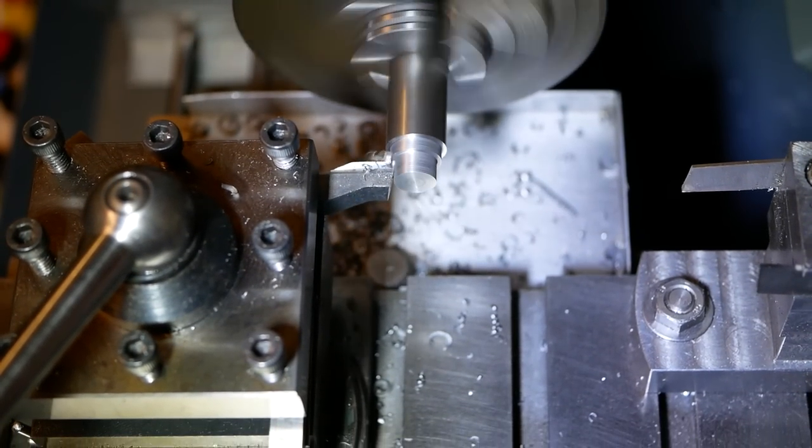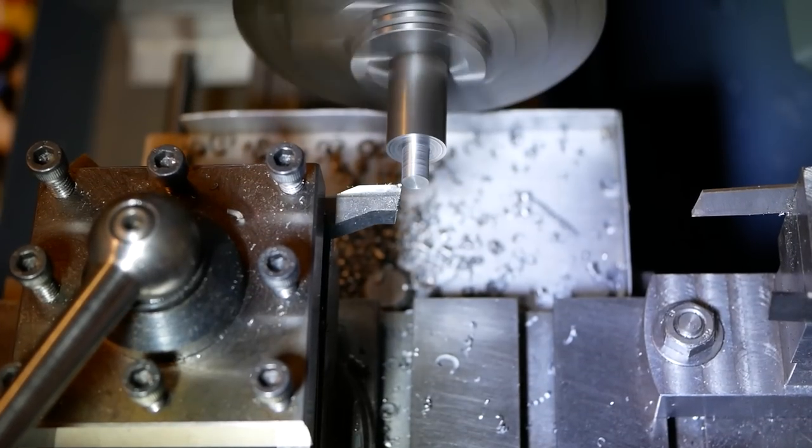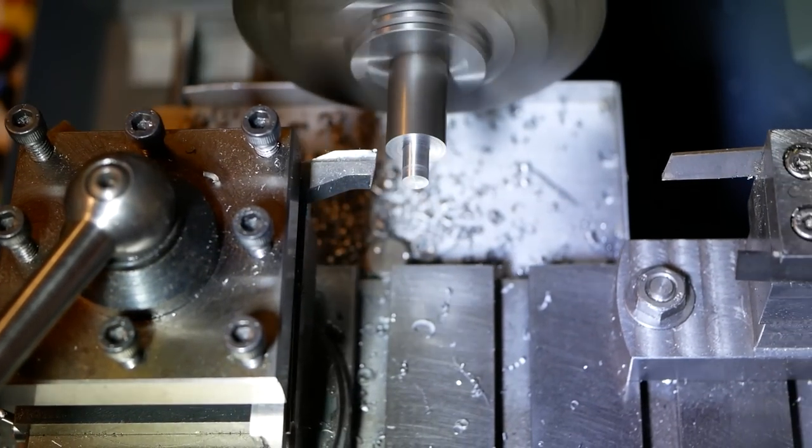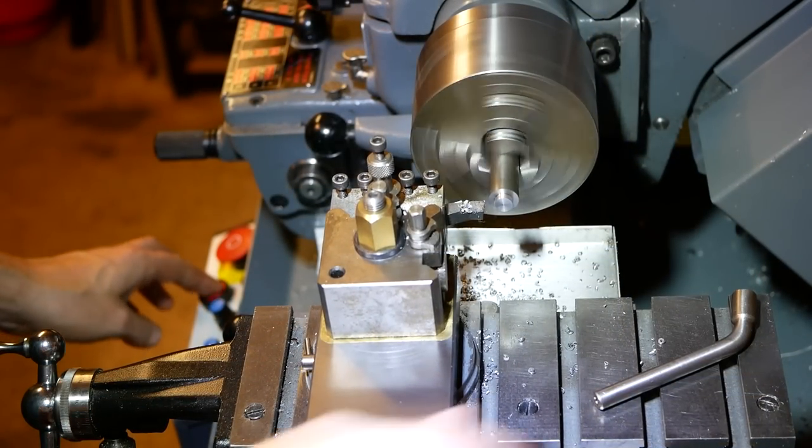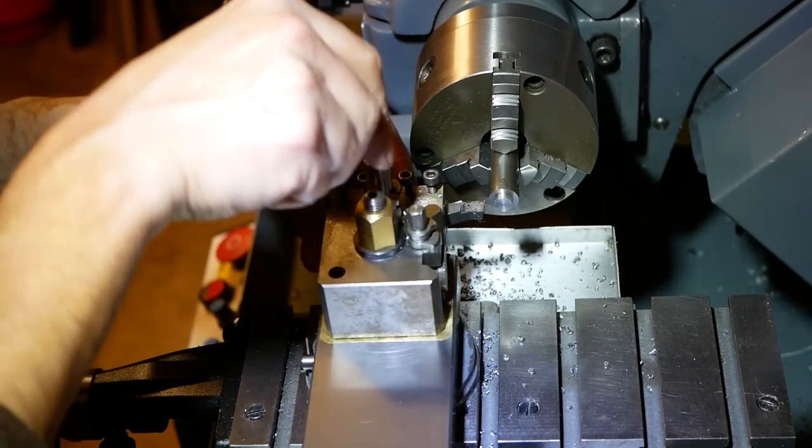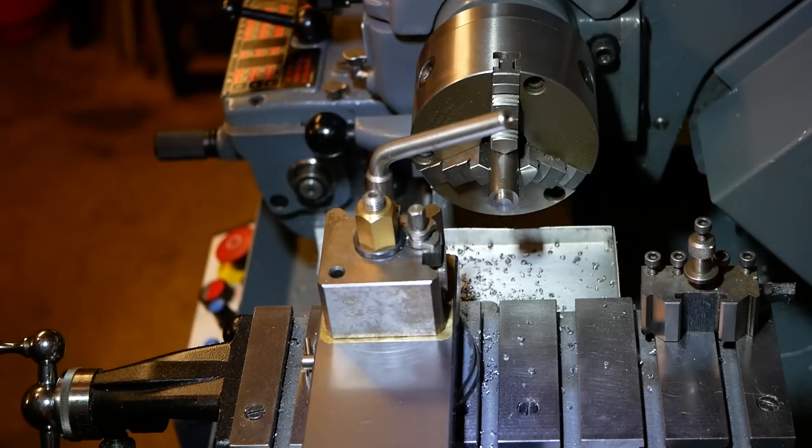Provided the four-way tool post is well made, the final diameter within 10 microns of nominal size should be achievable just using the dial on the cross slide. This level of repeatability is only possible with the most expensive quick change tool posts, which are roughly an order of magnitude more expensive than an equivalent quality four-way.